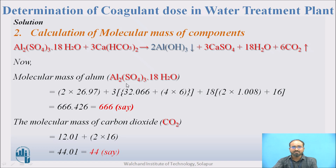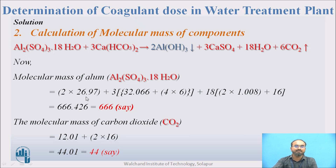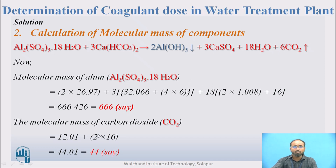To calculate the molecular mass of alum, using the chemical formula: Al₂(SO₄)₃·18H₂O — that is 2 × 26.97 (Al) + 3 × (32.066 (S) + 4 × 16 (O)) + 18 × (2 × 1.008 (H) + 16 (O)). This comes to approximately 666.426, so the molecular mass of alum is taken as 666.